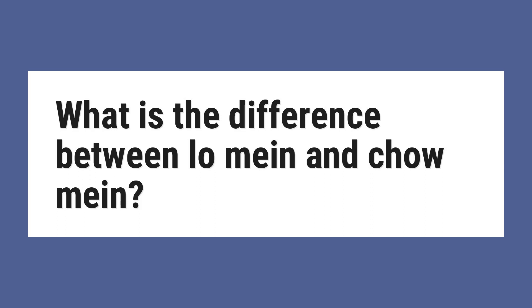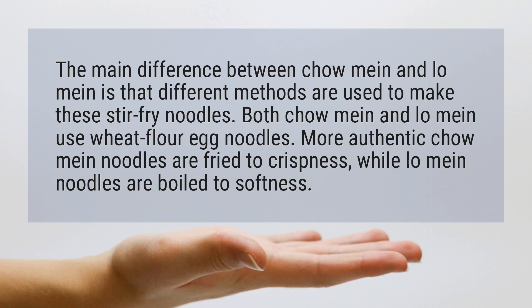What is the difference between lo mein and chow mein? The main difference between chow mein and lo mein is that different methods are used to make these stir-fry noodles. Both chow mein and lo mein use wheat flour egg noodles. More authentic chow mein noodles are fried to crispness, while lo mein noodles are boiled to softness.